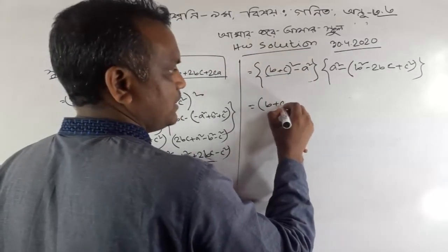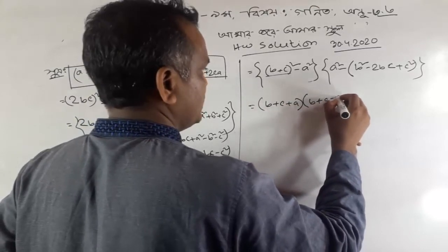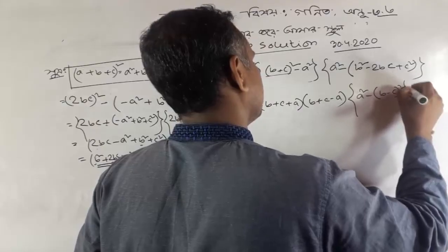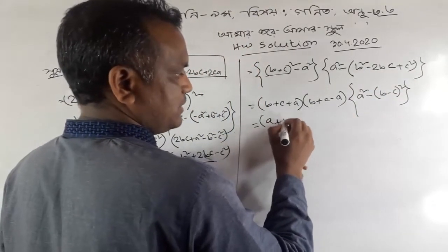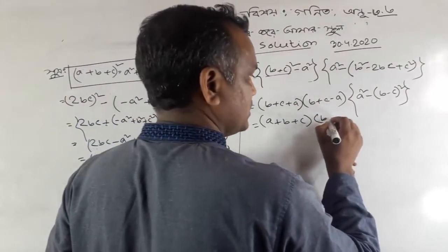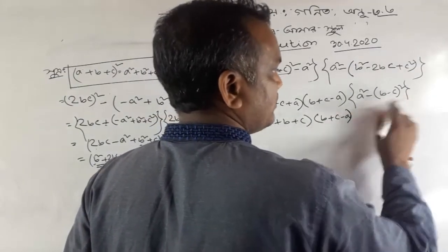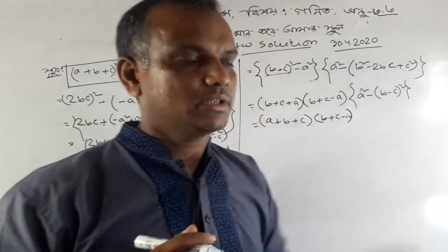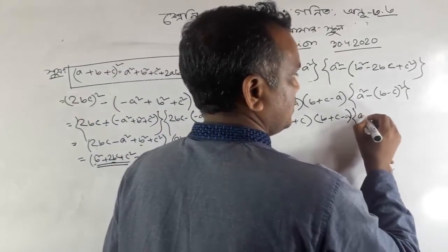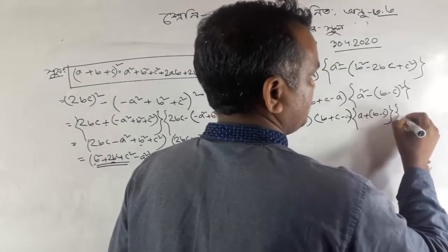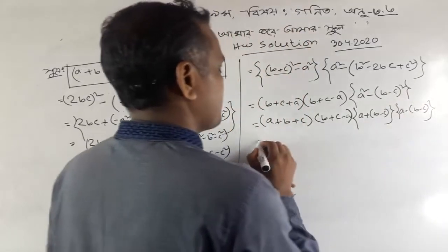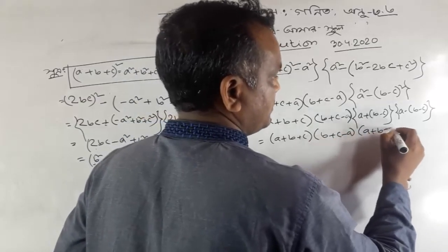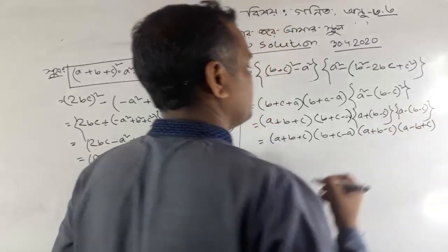A plus b into a minus b. A squared minus b minus c. This is not a plus b plus c. This is a squared minus a plus c. This is a squared minus b plus c, which is a squared minus b squared. A plus b into a minus b. This gives us b plus c minus a, times a plus b minus c, times a minus b minus c, plus c.